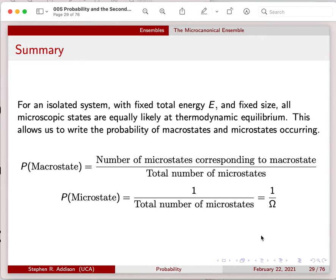For an isolated system of fixed total energy E and fixed size, all the microscopic states are equally likely at thermodynamic equilibrium. This allows us to write the probability of macrostates and microstates occurring. The probability of a macrostate is the number of microstates within that macrostate divided by the total number of microstates. And the probability of a microstate is one over the total number of microstates, so it's one over the multiplicity.